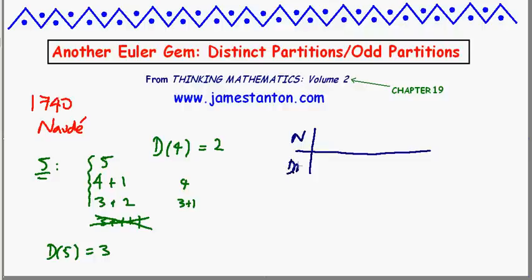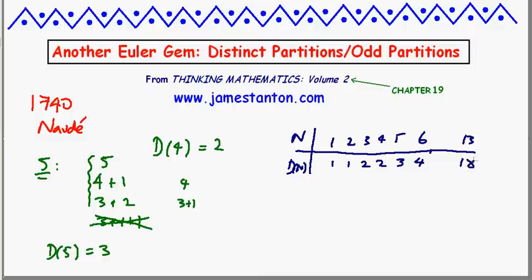If N is the input and D(N) is the output, for N = 1, 2, 3, 4, 5 we get D(N) = 1, 1, 2, 2, 3. It looks Fibonacci-esque, but it's not. For N = 6, there are only 4 ways to break that down. And for a bigger challenge, like N = 13, it turns out there are 18 ways to break 13 into distinct parts — you might want to check that.